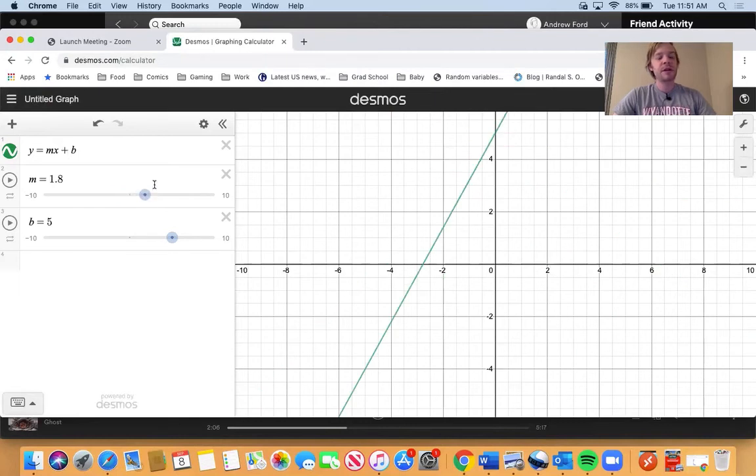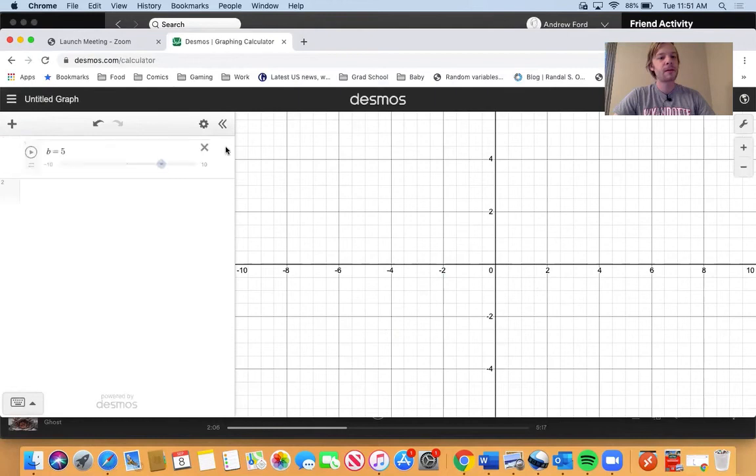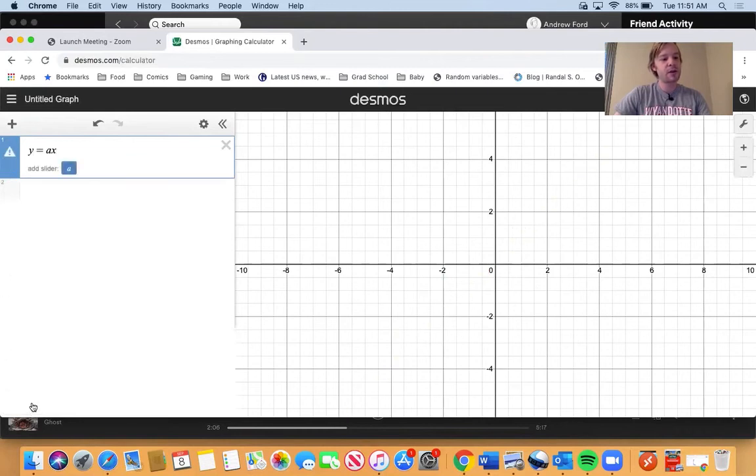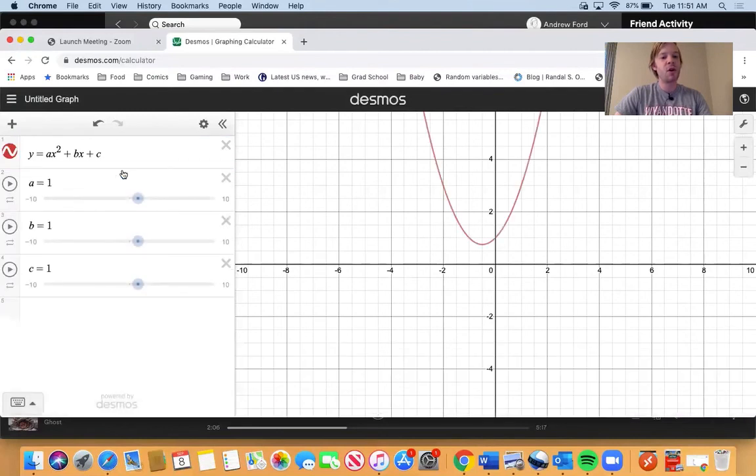And this idea with the sliders will work for any form of a general equation, so it works with slope intercept form like we see here, but it will also work with standard form of quadratic. So I'm going to close this out, and then I'm going to type y equals ax squared plus bx plus c. So this is standard form for a quadratic equation. Once again I see sliders for a, b, and c, and I'm going to press all right here.